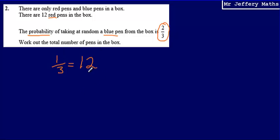If we know that 1/3 equals 12, we can work out the total number of pens in the box. If we multiply this by 3, that gives us 3/3 or all of the pens in the box. So 12 multiplied by 3 gives us 36.